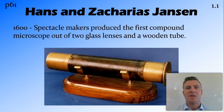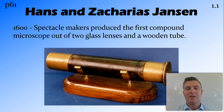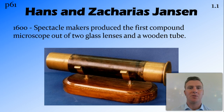The story of cell theory is pretty much the story of the development of microscopes and how microscopes have got better and we've been able to see more things. The first microscope was created by Hans and Zacharias Janssen. They were spectacle makers and they produced a microscope with two lenses and a wooden barrel, and this was in 1600.